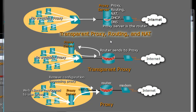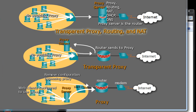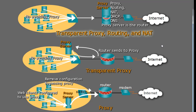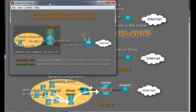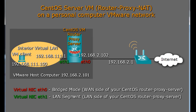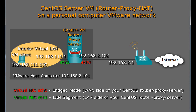In this tutorial series, we're going to set that up. To do that, we're going to use CentOS Linux, which is a server distribution of Linux — freely distributed and identical to the Red Hat Enterprise Linux server distribution. Red Hat's been around forever. This demonstration will be run completely from my laptop, and anybody could do it. I'm calling this a CentOS server virtual machine router, proxy, and NAT on a personal computer VMware network.